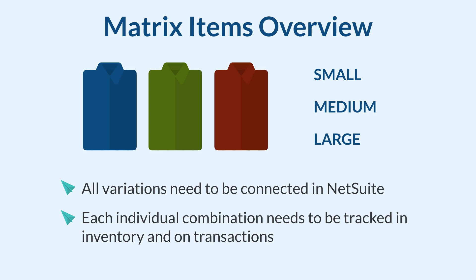The NetSuite Matrix Items feature uses parent items and sub-items to accomplish this. The parent items keep everything clearly connected in NetSuite, but the child items track inventory for each combination and show up on the transaction records.